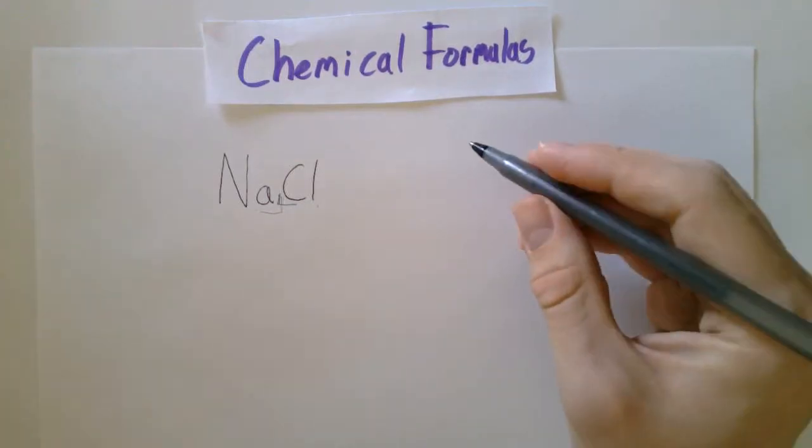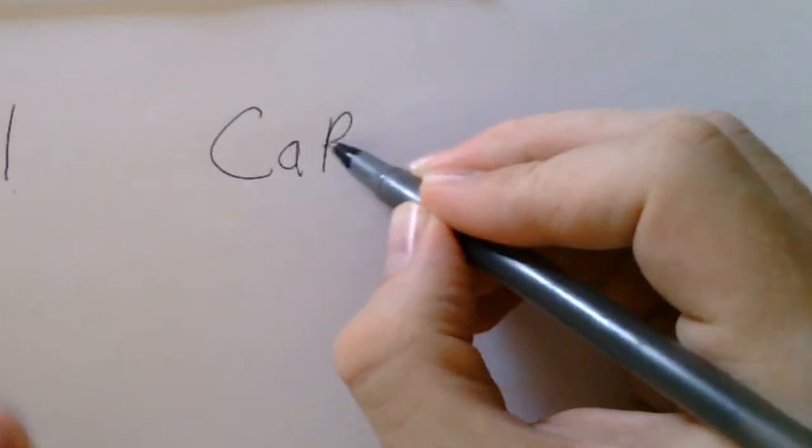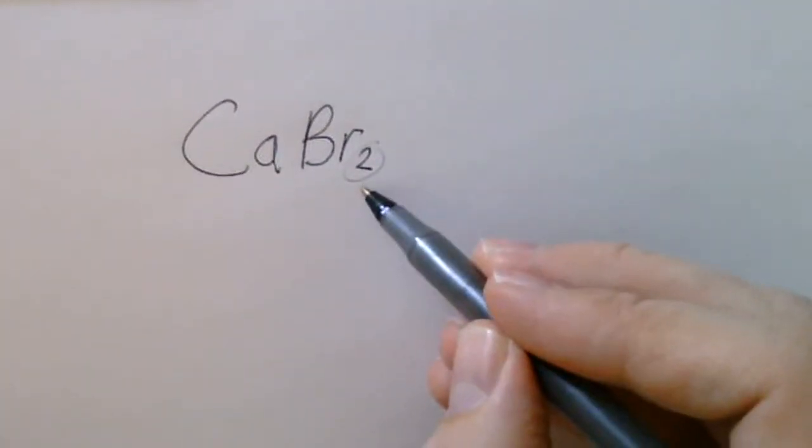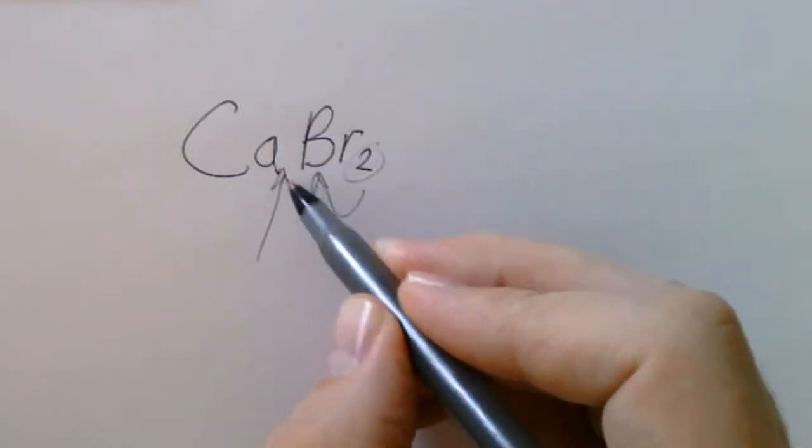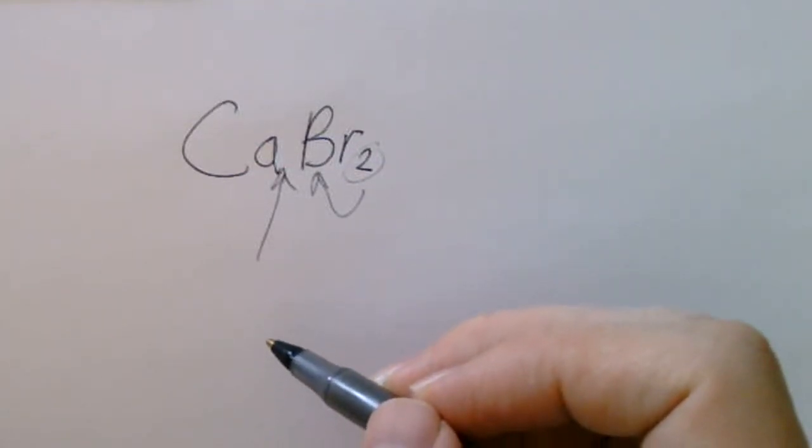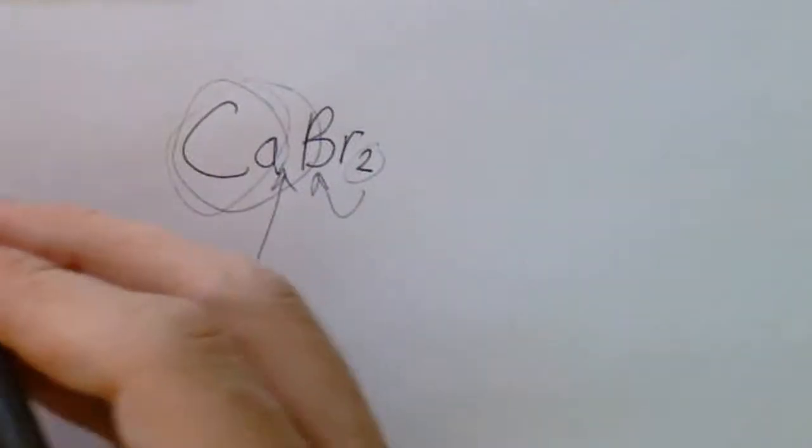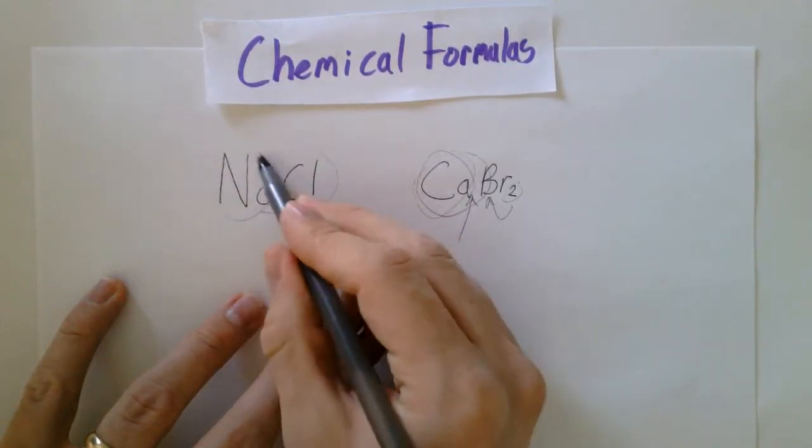So another compound is calcium bromide. Now this two tells you that you've got two bromines here, but there isn't a number written right here. The lack of a number in chemistry always means one. So there's one calcium there, and over here there's one chlorine and one sodium.